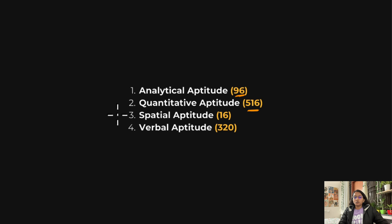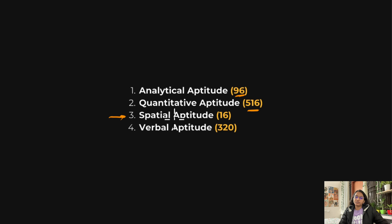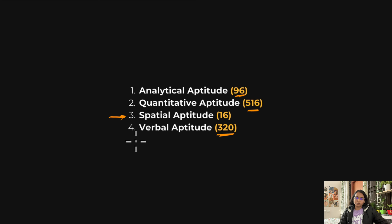Special aptitude is a newly added topic, added about two years back to the GATE syllabus, so there are very few questions from it till now. For verbal aptitude, there are a total of 320 questions.